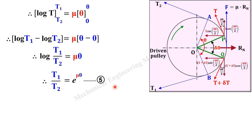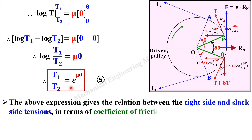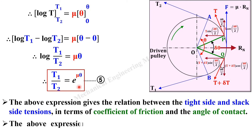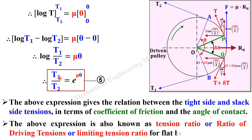This equation is known as the tension ratio for the flat belt drive. The above expression gives the relation between the tight side tension and slack side tension in terms of the coefficient of friction mu and the angle of contact theta. It is also known as the ratio of driving tensions or limiting tension ratio for the flat belt drive. This is the final derivation. If you have any doubts, write in the comment box. Thanks for watching — please press the like button.